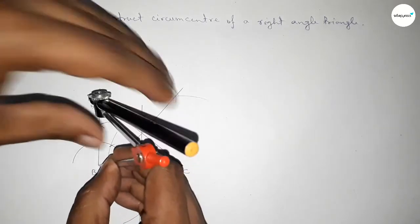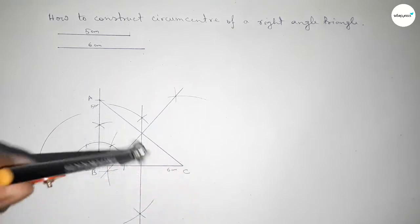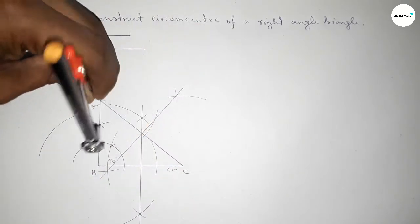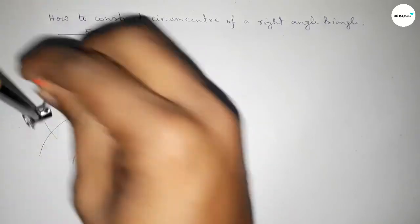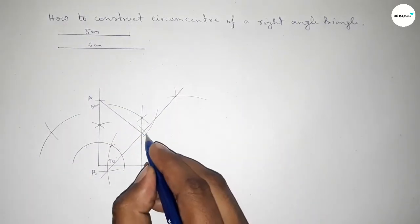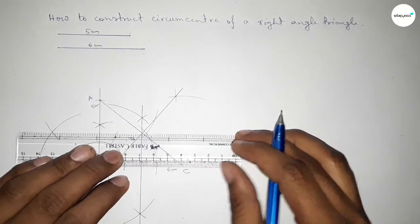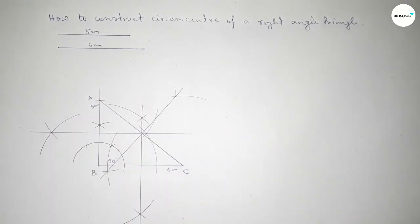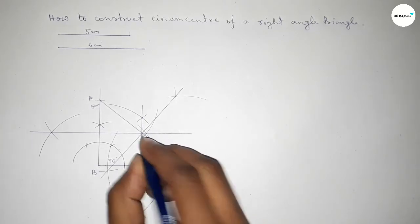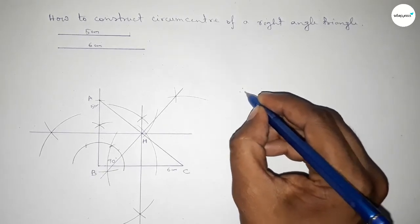Next we have to bisect the line AB. Putting the compass at one end and taking greater than half of AB, draw an arc. With the same length from the other end, both curves intersect at two points. Join this bisector — the three bisectors intersect at a point on the hypotenuse, taking this as point H.